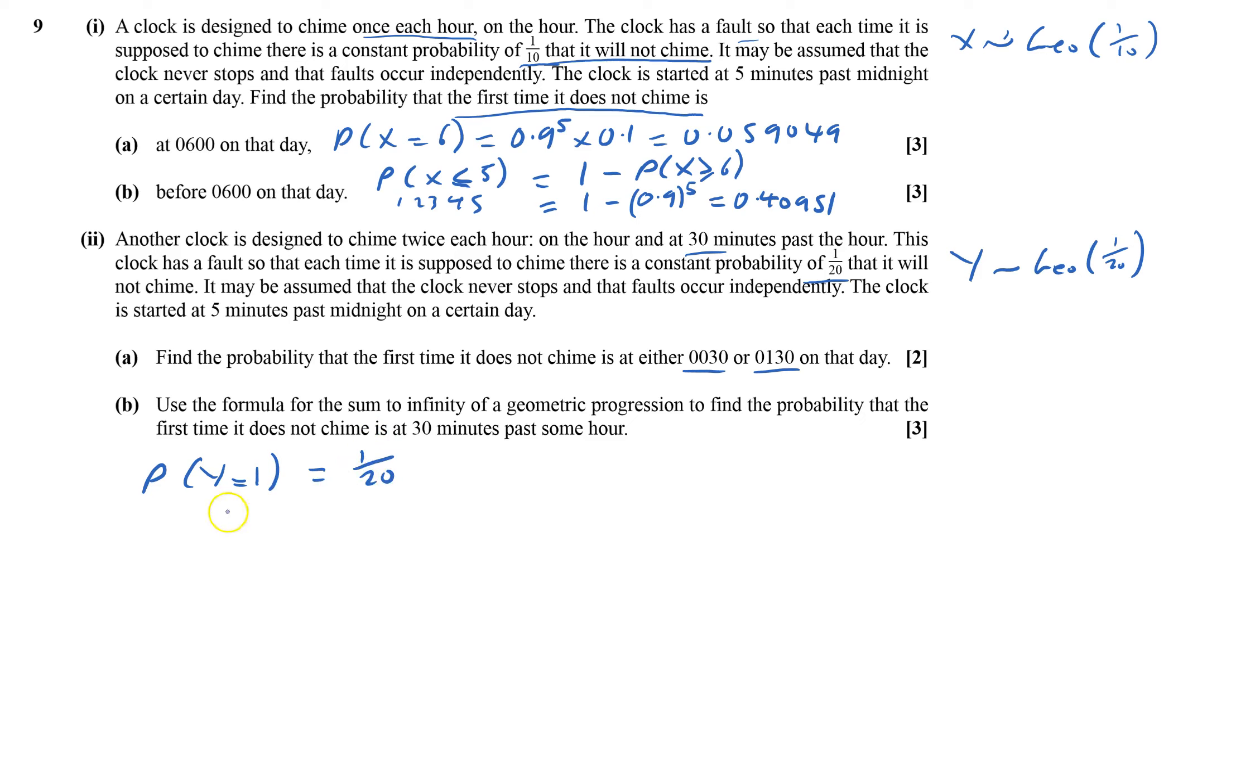That means the first time it doesn't chime is one-twentieth at half past. We've also got to work out probability the third time. I've got to have chimed twice, so 19 twentieths twice, times that by one-twentieth of failure on that go. That's 0.05 and 0.045125. Add them up: 0.095125.